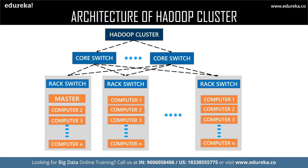Now let us have a look at the overview of the Hadoop cluster architecture, followed by the rack awareness algorithm. The architecture of Hadoop cluster consists of racks — each rack consists of a set of computers, and one of the racks contains the master. These racks use a core switch to communicate with each other.